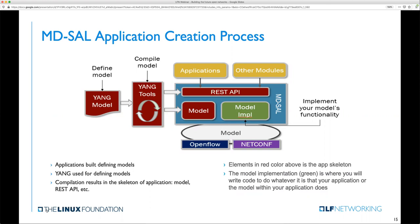MD-SAL is probably the key reason for OpenDaylight's longevity and flexibility. The second aspect is that the framework is quite modular and multi-protocol. It allows developers and users to install only the protocols and services they need, rather than everything. You can also combine multiple services and protocols to solve more complex problems as needs arise. To develop applications, you first define your model using Yang, compile it with YangTools inside OpenDaylight, and the compilation results in the skeleton of the application, including the REST API. The red elements in the diagram represent the application skeleton compiled by YangTools, while the green model implementation is where you write your handlers, notifications, and interfacings.